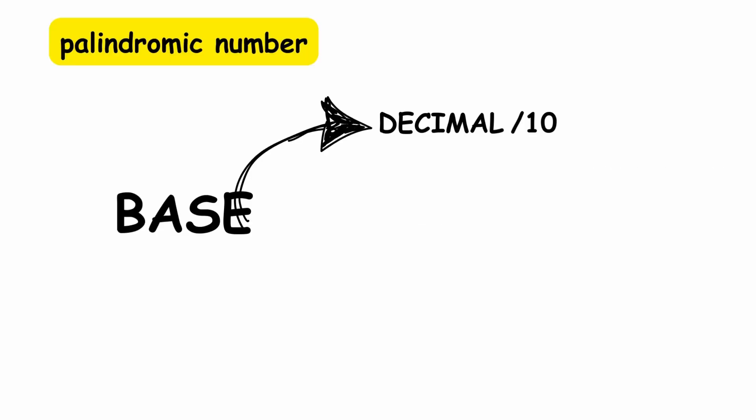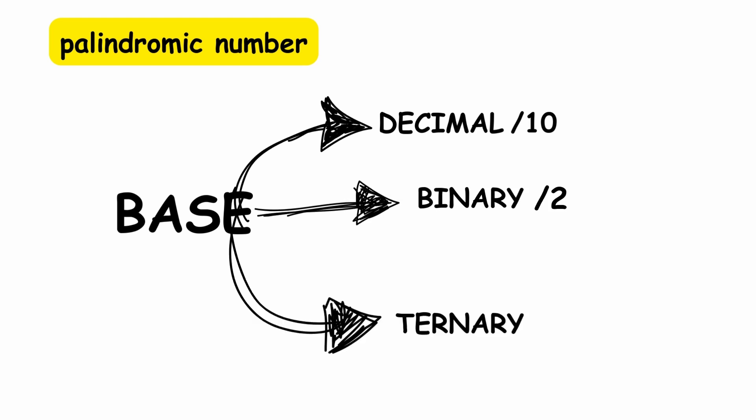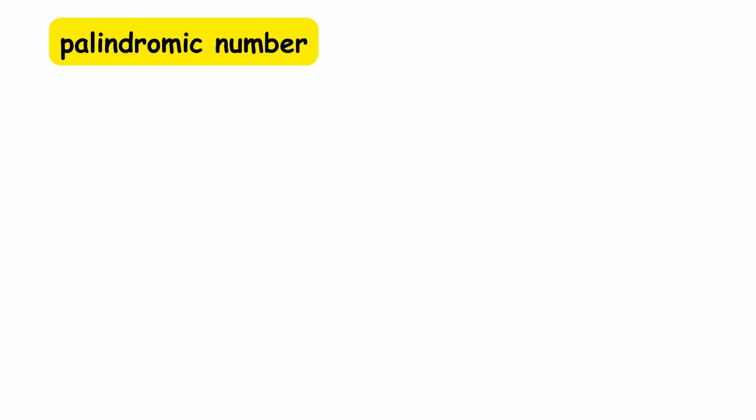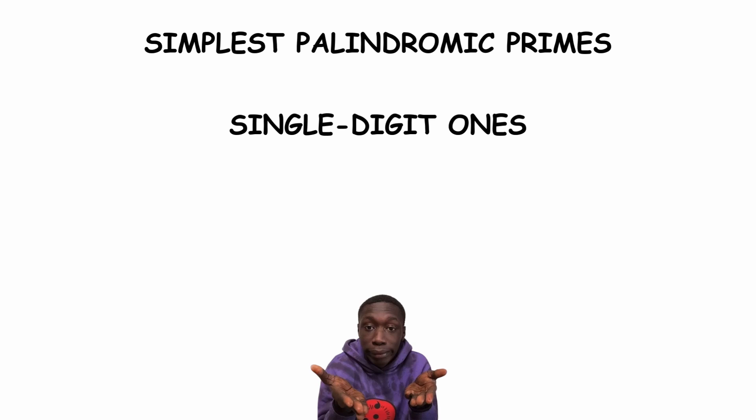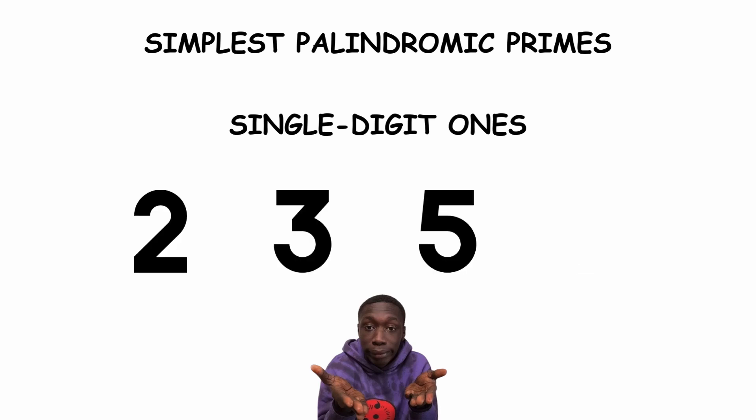However, other bases can be used as well, such as binary, or base 2, and ternary, or base 3. One type of palindromic number is a palindromic prime, or palprime for short, which is exactly what it sounds like. The simplest palindromic primes are the single digit ones, whose palindromicity is obvious. In base 10, these are 2, 3, 5, and 7.